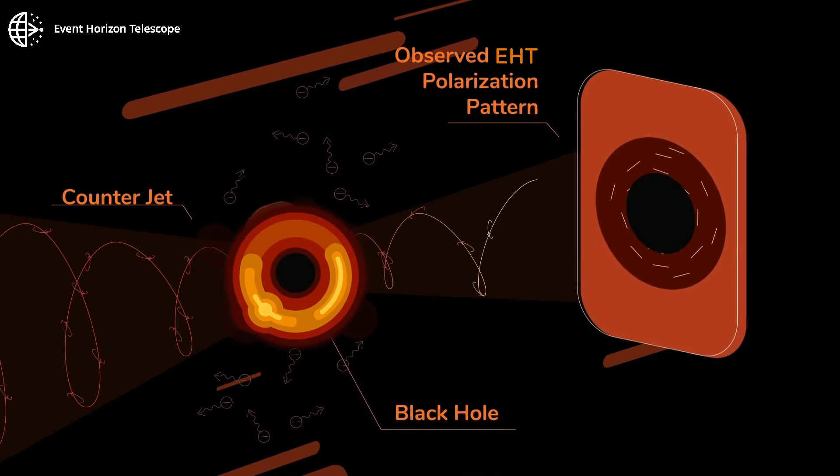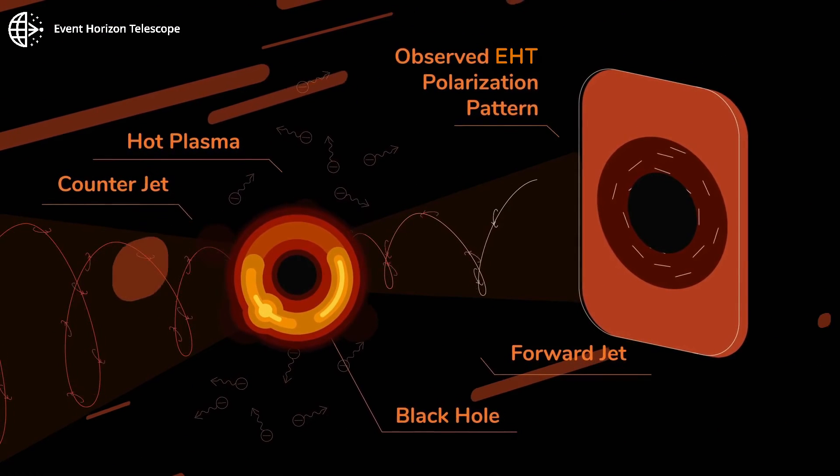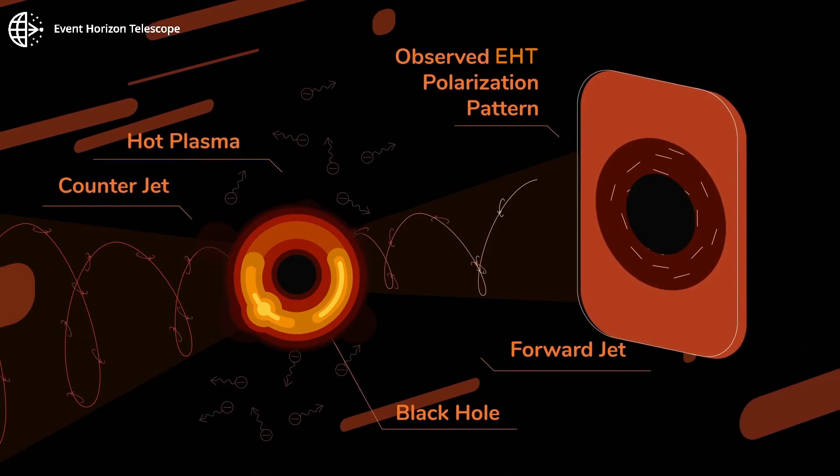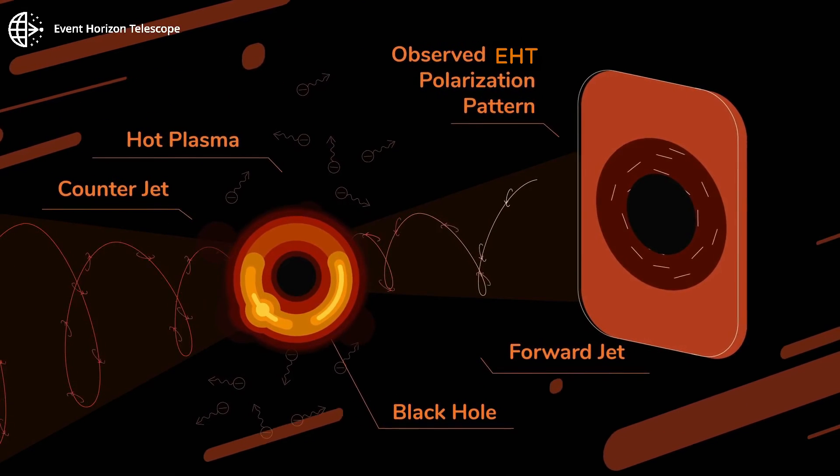The strong gravity near a black hole bends the magnetic field and twists the polarization direction of the light from the surrounding plasma.